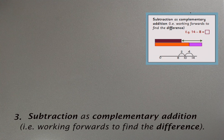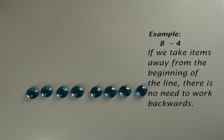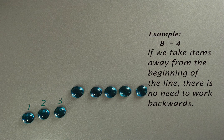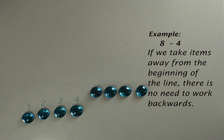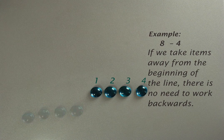The next pre-skill that I want to look at is subtraction performed as complementary addition, and what that means is that we can work forwards to find the difference instead of having to work backwards. In my example, eight minus four, you can see that if we take the four away from the beginning of the line, there's no need to do any counting backwards at all.